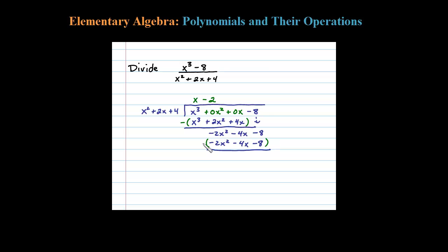You can see those two trinomials are the same, so when I subtract I expect to get 0. Negative 2x squared plus 2x squared is 0, negative 4x plus 4x is 0, and negative 8 plus 8 is 0. The remainder is 0, so it goes in evenly. The quotient of these two polynomials is equal to x minus 2 using polynomial long division.